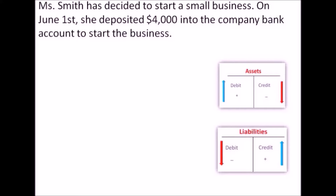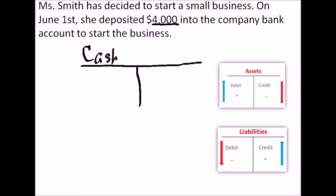Let's take a look at our first journal entry. Miss Smith has decided to start a small business. On June 1st she deposited $4,000 into the company bank account to start the business. Our first t-account is going to be cash. She deposited cash into the business, so we'll create a t-account and call it cash. On the right-hand side of the screen I put a small box showing how credits and debits are treated in assets and liabilities. You have to ask yourself: is the asset going up, which is a debit, or is the asset going down, which is a credit? It's going up, so that means it's a debit. We put the date the transaction occurred — 6-1 — and then the amount, which was $4,000.